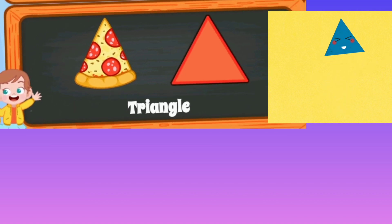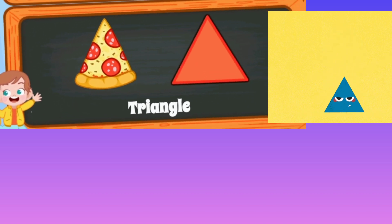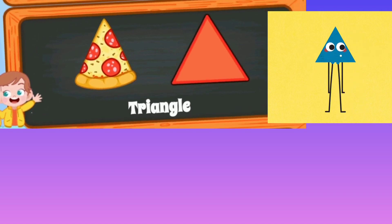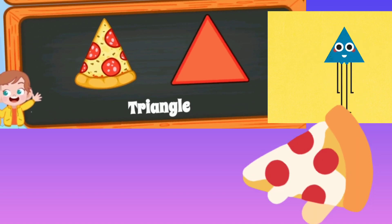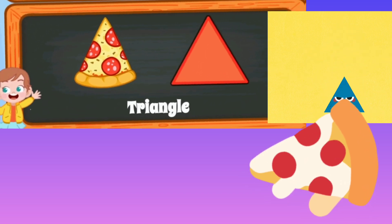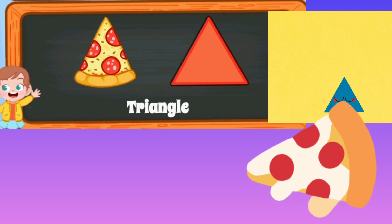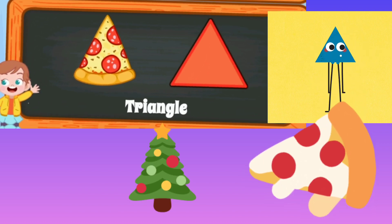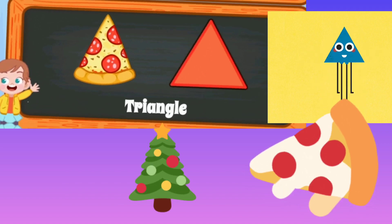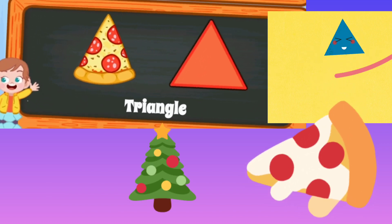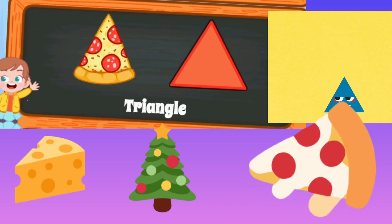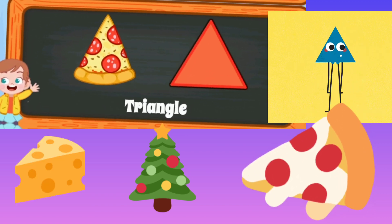This is a triangle. A triangle has three sides — one, two, three. Pizza is triangle in shape. X-mas tree is triangle in shape. Cheese is triangle in shape.